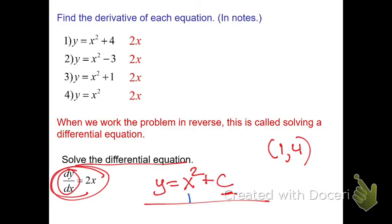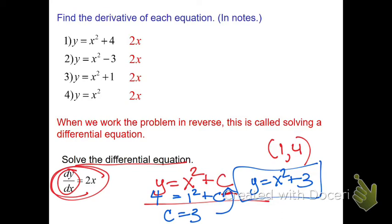So for this one, if I said x is 1 and y is 4, then c would have to equal 3. And you plug it back in and you'd get y equals x squared plus 3. This would be the particular solution.